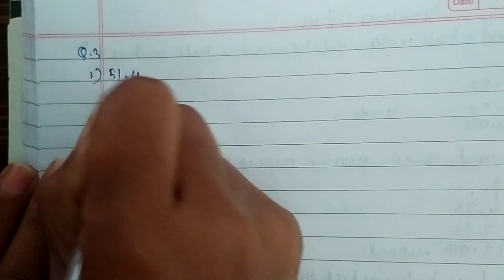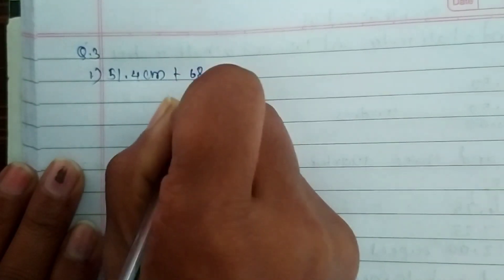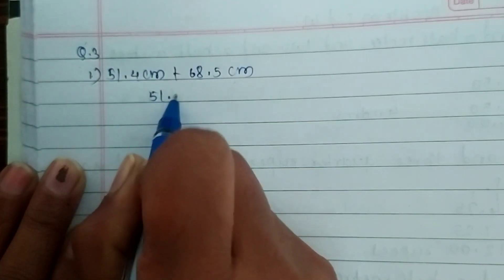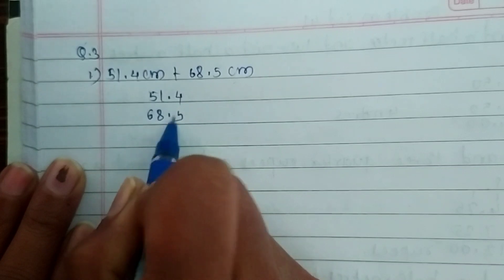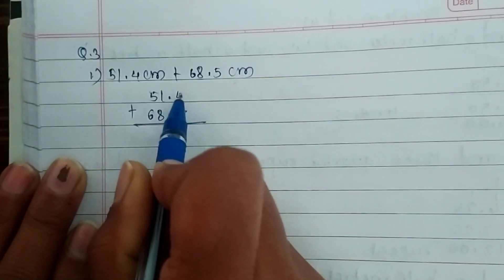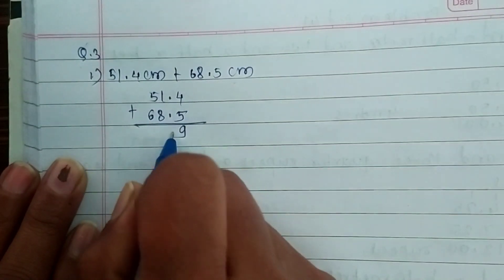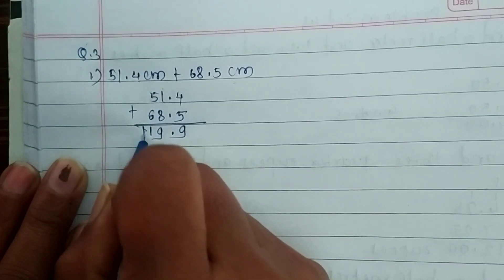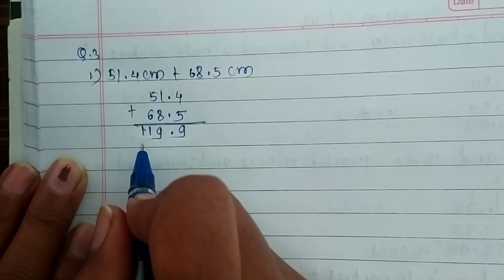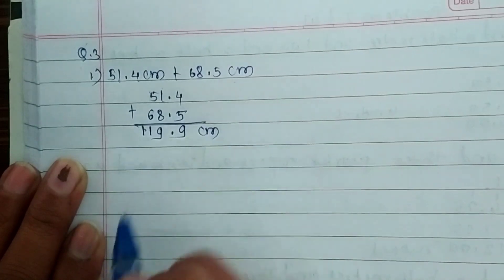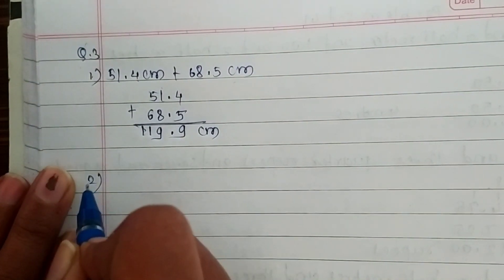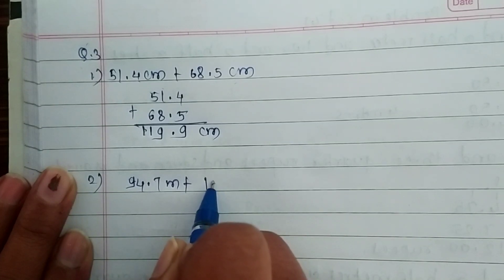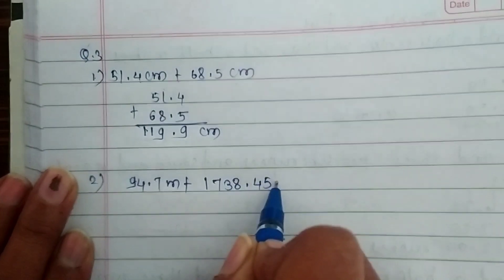The first question is 51.4 centimeters plus 68.5 centimeters. Ignore the units first and write the numbers: 51.4 and 68.5. Add them: 4 plus 5 is 9, place the decimal point, 1 plus 8 is 9, 5 plus 6 is 11. The answer is 119.9 centimeters.